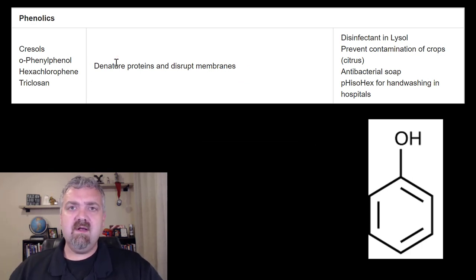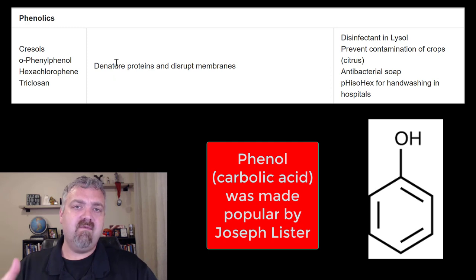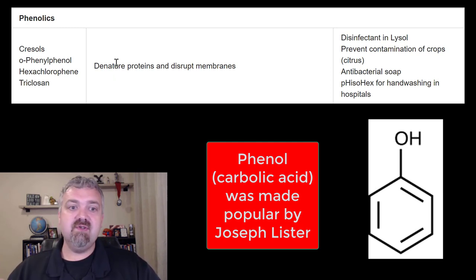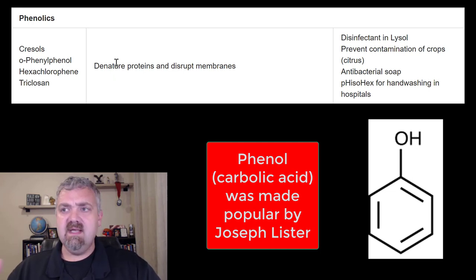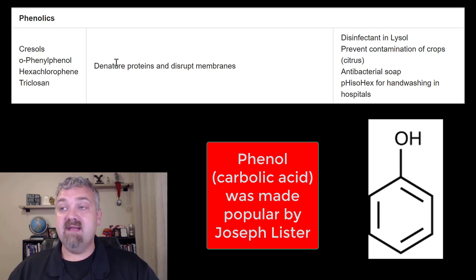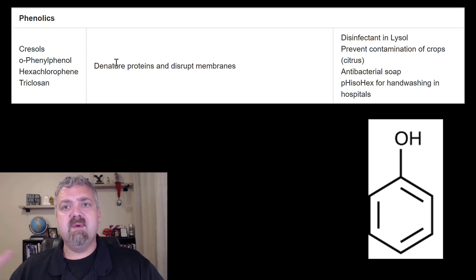Starting with phenol — historically, Joseph Lister started using carbolic acid, also known as phenol, in the 1860s to disinfect his surgical suites and surgical wounds. This led to Listerine being produced in the late 1870s, which was a phenolic-based mixture that also had alcohol. It had tons of uses in the past and is still used today as a mouthwash. Most phenols, though, have been replaced by the phenolics we'll cover next.